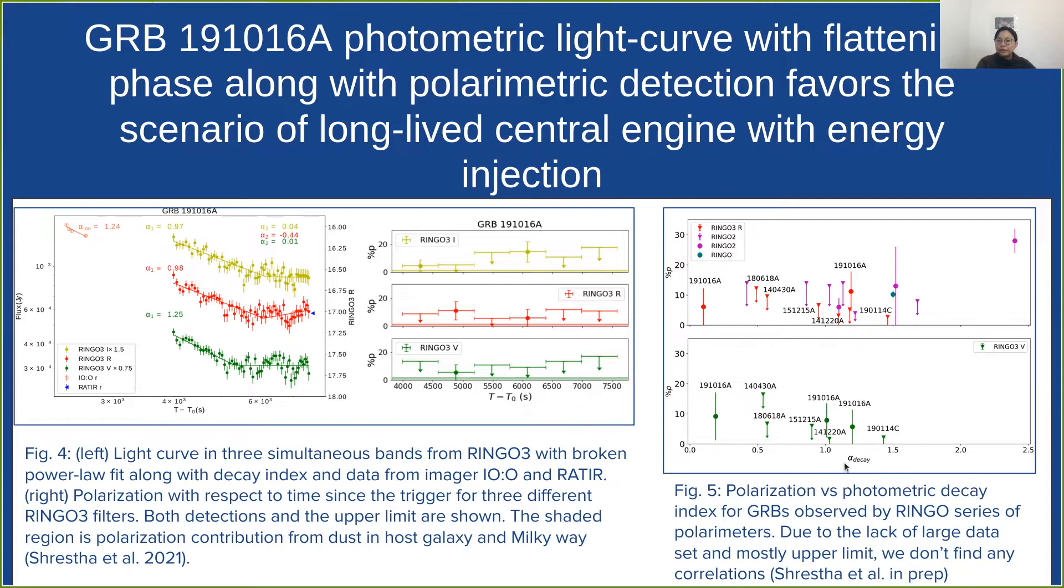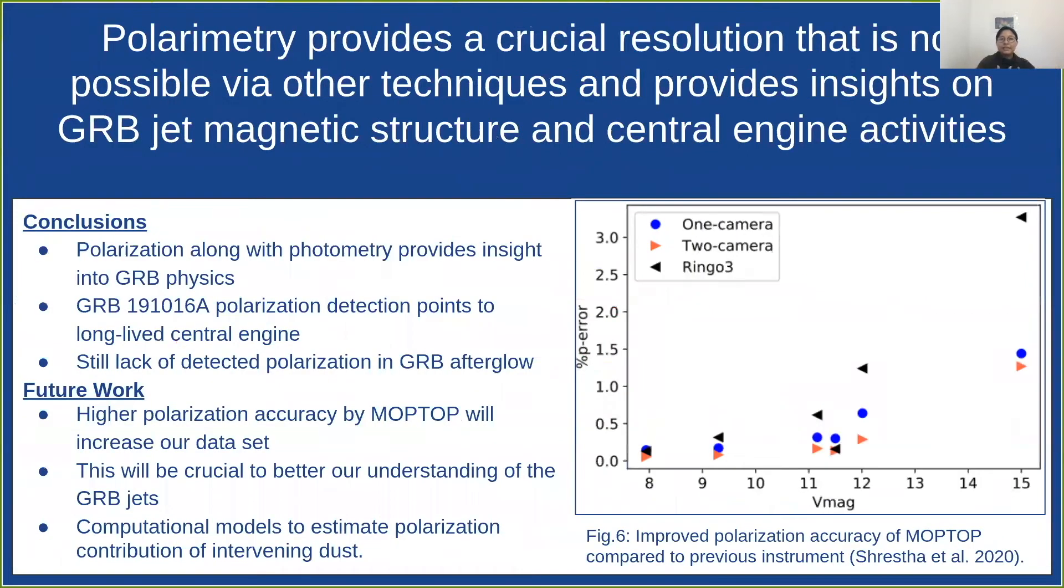We have been looking into how polarization is affected by different properties of gamma ray burst jets. Here is an example of photometric power law decay index, but we have been looking at other properties as well. If you're interested about how polarimetry can be complementary to your research when we are looking at transients like GRB, please come by the poster. Thank you very much.